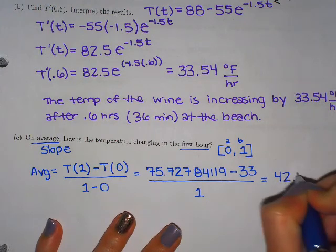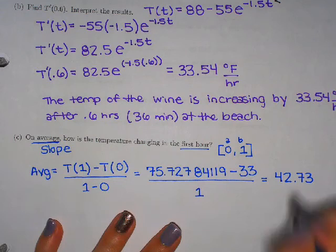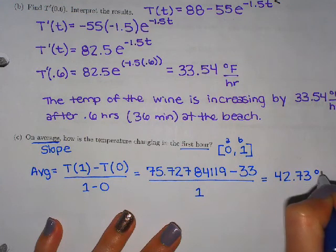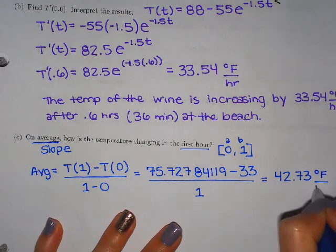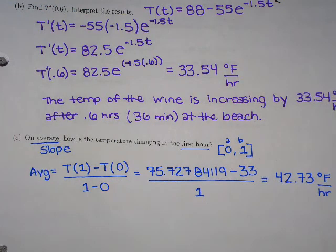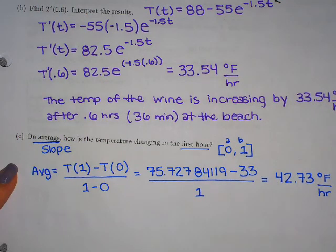And we're dividing that by one because one minus zero is one. And so what we get, and now we can round because it's our final answer, is 42.73 divided by one, which is going to be 42.73. So this is degrees Fahrenheit, the units from the numerator over hours, the units from the denominator. Rates of change always have two units.